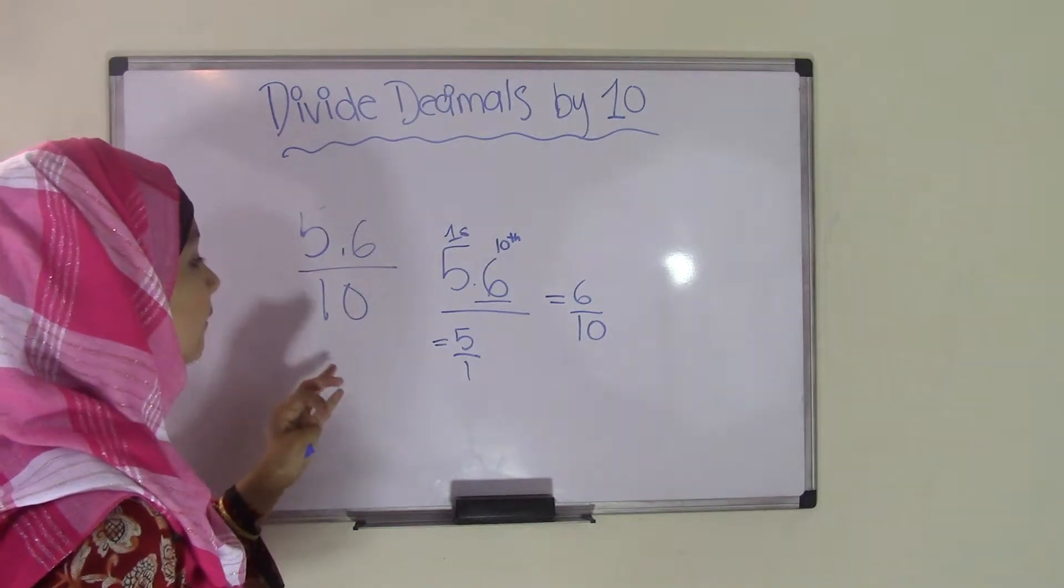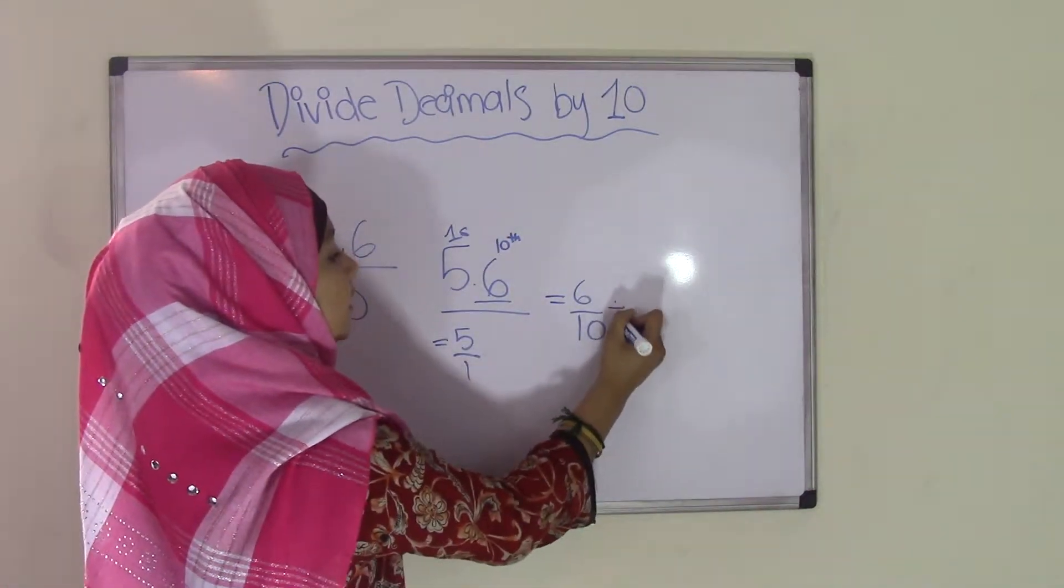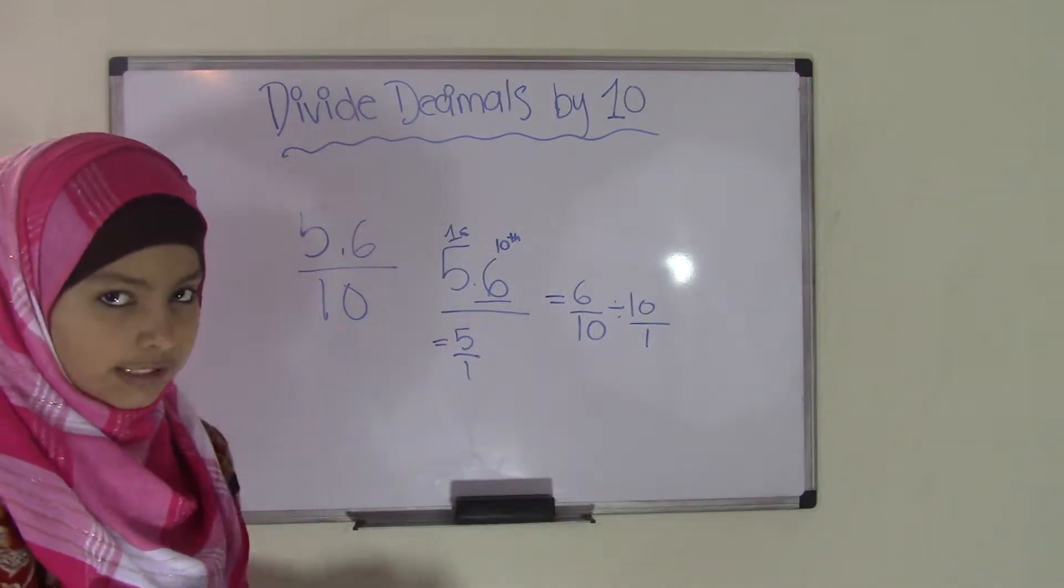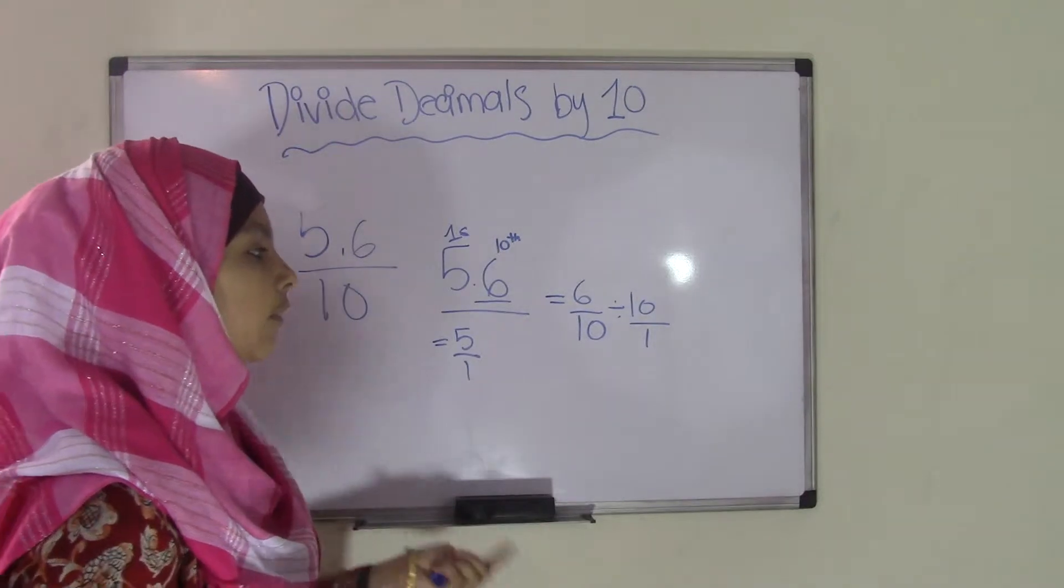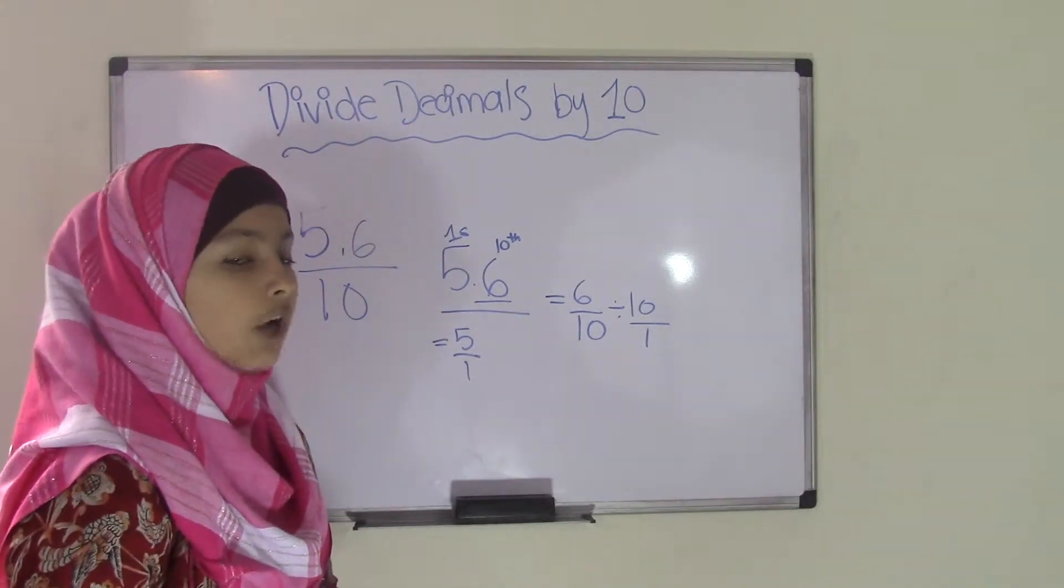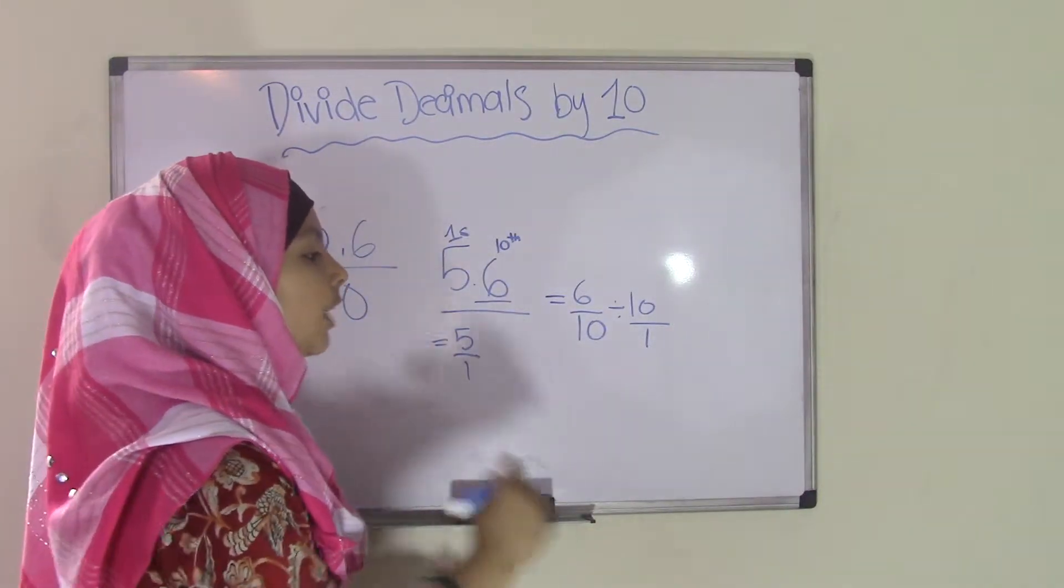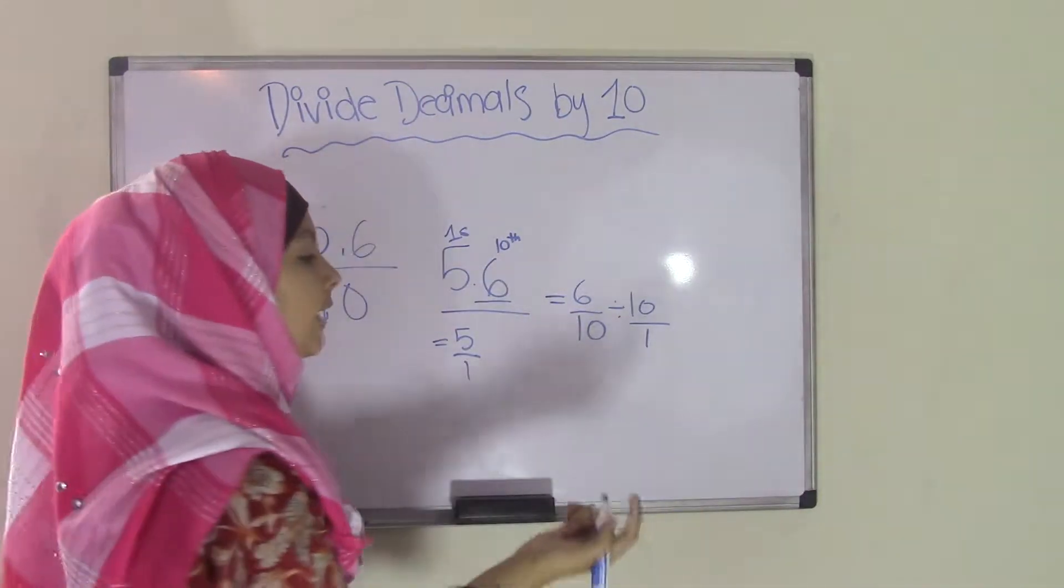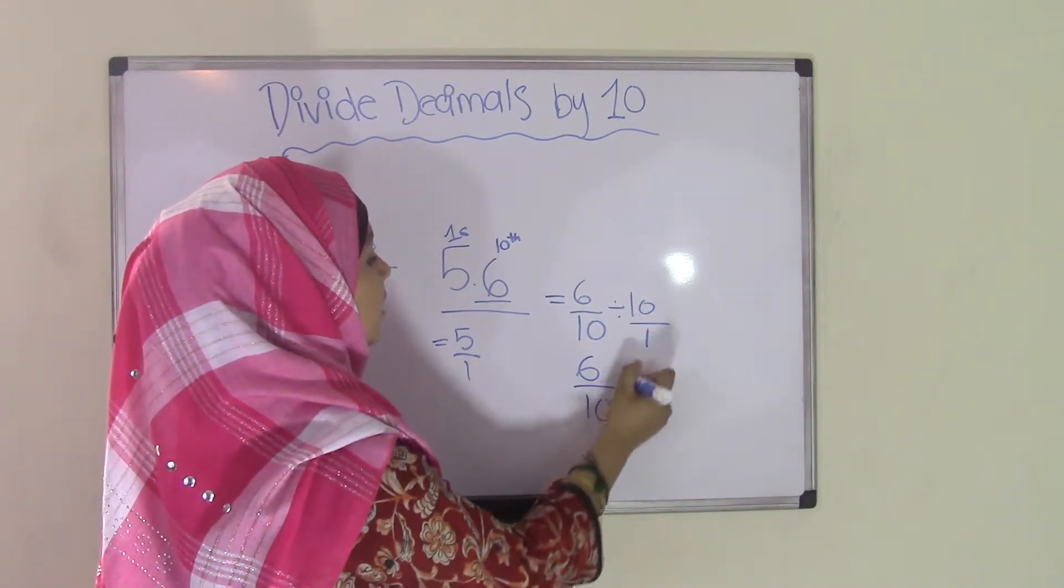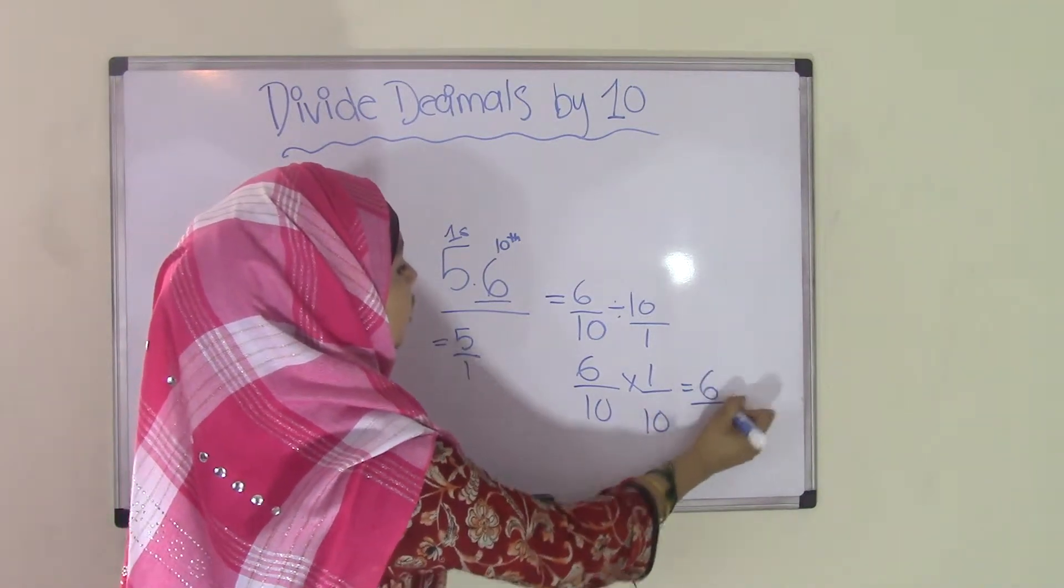Now, if you're going to divide 6 tenths by 10, that means it will become 6 tenths divided by 10 over 1. Whenever you're doing division of fractions, you need to make reciprocals. Reciprocals are when you change the second fraction upside down and you change the sign to multiplication. So this would become 6 tenths times 1 over 10. That means it will become 6 over 100.